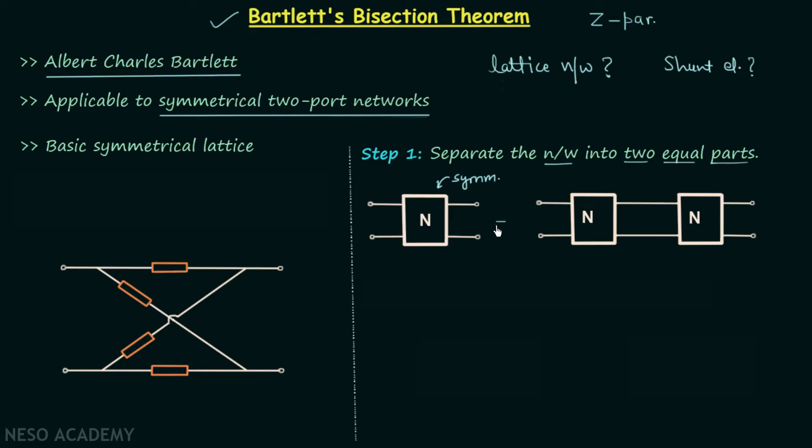I have separated the symmetrical two port network into two equal parts and let's say each part is network N sub H, representing that they are the half networks of the original two port network. So this is what we have to do in step number one.